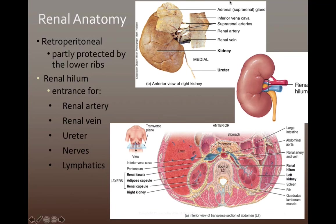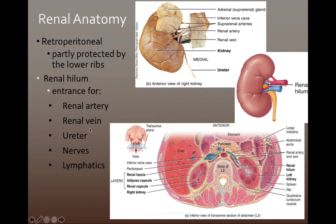One of the most superficial features of the kidney is the renal hilum. A hilum, or hilus, of any organ is the location where vessels come in and leave — the lungs also have a hilus where the pulmonary arteries, pulmonary veins, and bronchi enter and leave. On the kidneys, the renal hilum contains the renal artery, the renal vein, the ureter, as well as nerves and lymphatic vessels. The renal artery supplies the kidney with blood, the renal vein drains the filtered deoxygenated blood, and the ureter takes waste products down to the urinary bladder.